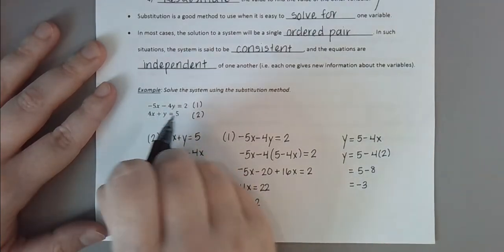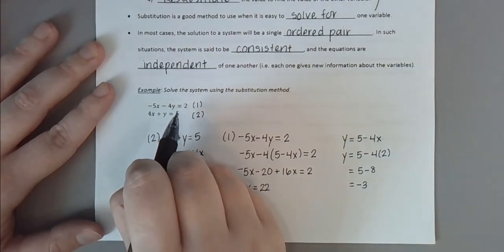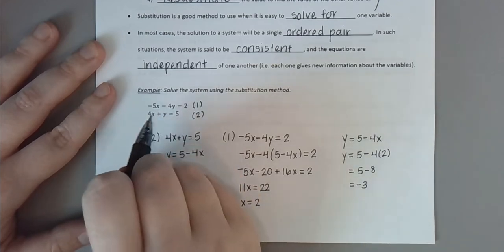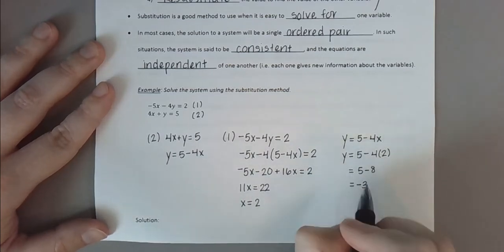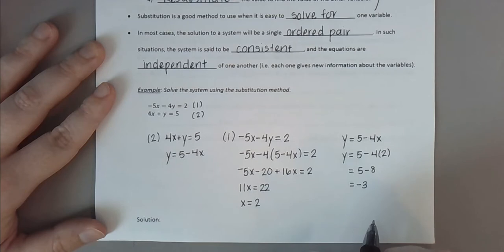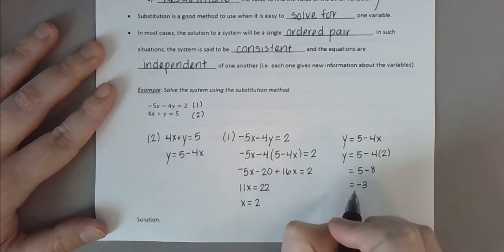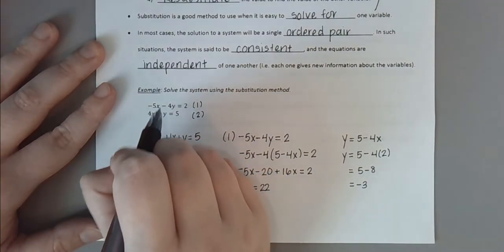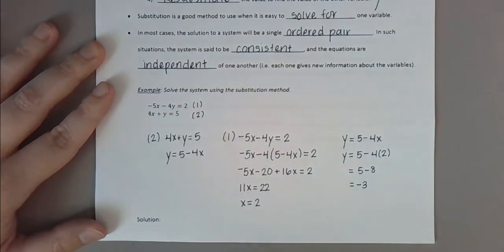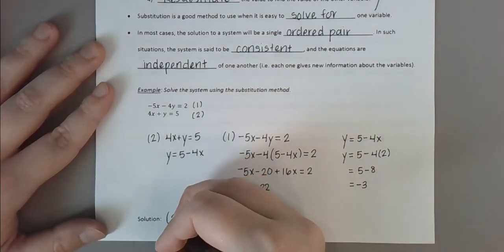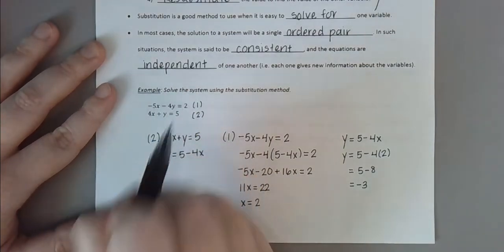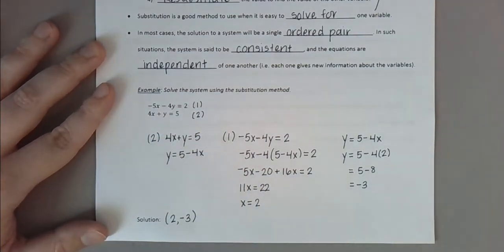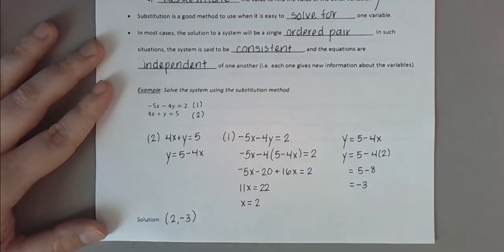Each of these original equations is a linear equation; they graph as two diagonal lines. We found x equals 2 and y equals negative 3. This represents the ordered pair (2, negative 3), which is where these two lines would intersect if we graphed them. Our solution is the ordered pair (2, negative 3) — the one ordered pair that those two graphs have in common.